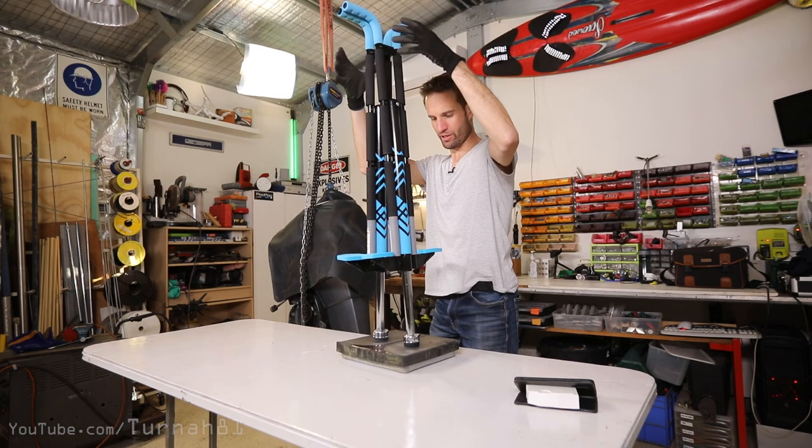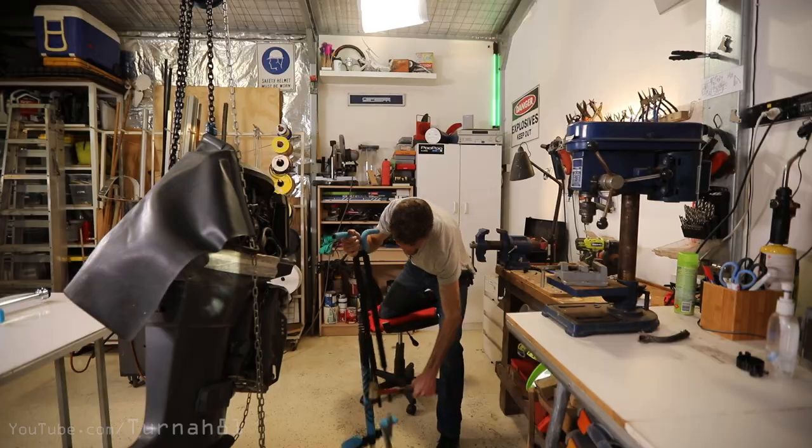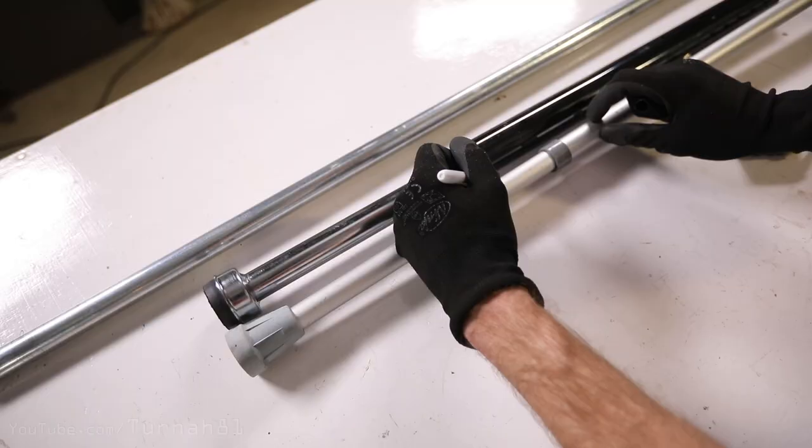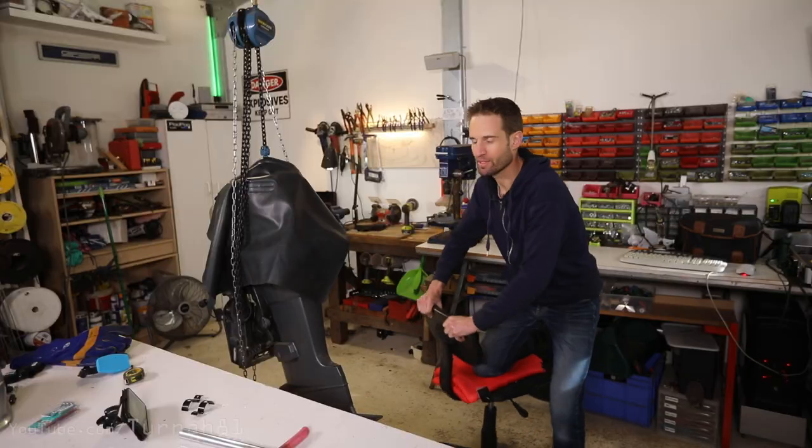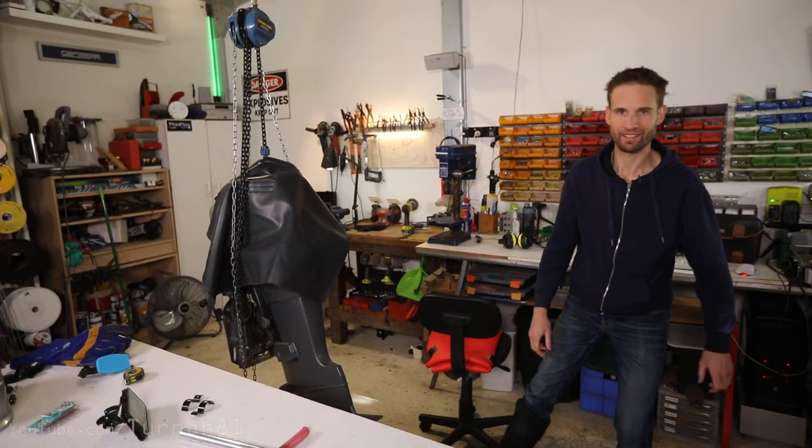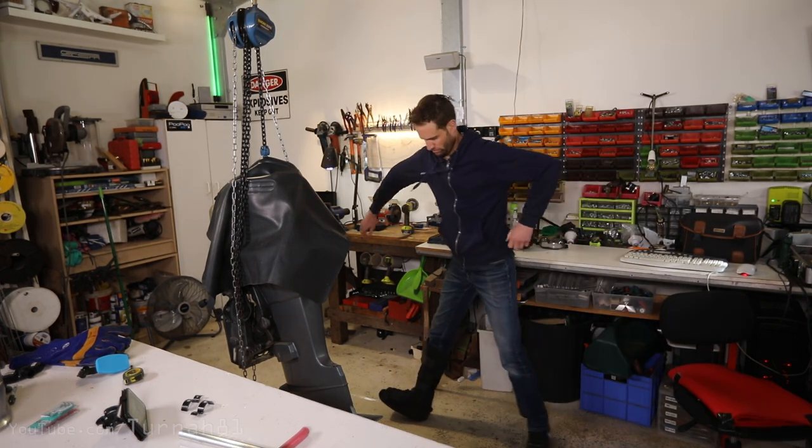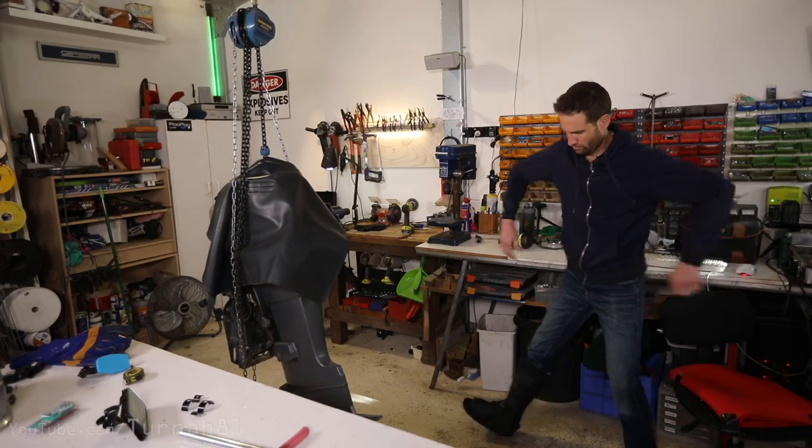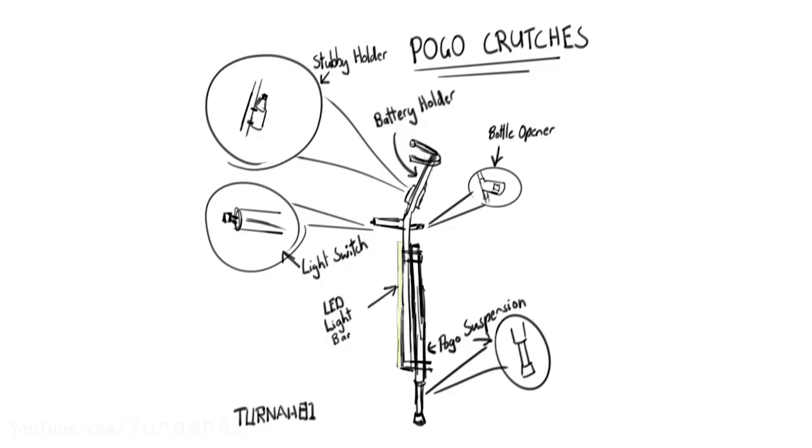So in my last video we got a bit of a plan together, broke some stuff and started welding things. Since starting this project though I found that my foot is well on its way to recovery allowing me to start load bearing with it. But what better way to undo that progress than to finish building the world's first pogo crutches?